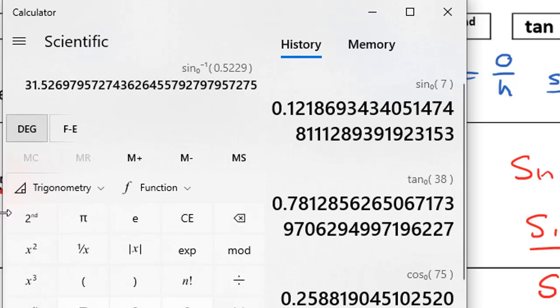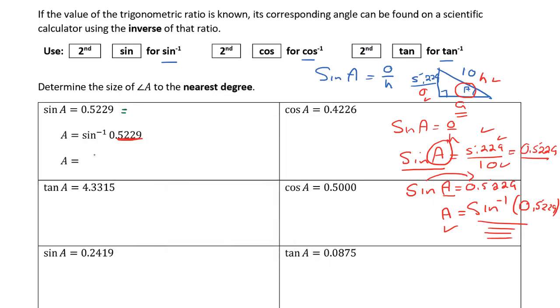As long as I am in degree mode, the measure of angle A is 31.5269 and so on. When writing down angles, you don't have to go to four decimal places, but you should go to two decimal places. The measure of angle A is 31.5 degrees.